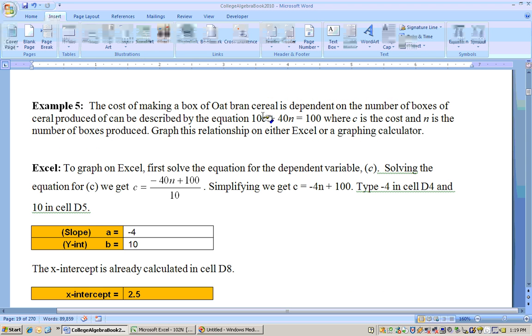Here's one more example, cost of making Oat Bran cereal. Here's the cost, and here's the number of boxes in. There is no X, Y, or T on this, so you would have to be told what is the dependent variable, and we're going to say the cost is the dependent variable. It says the cost of Oat Bran cereal is dependent upon the number of boxes. So the cost is dependent.